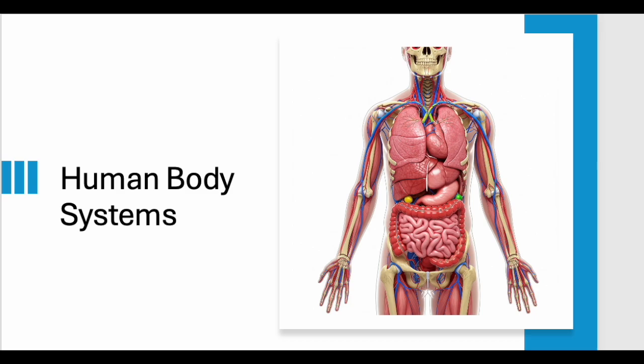So what exactly are these body systems we're talking about? Well, think about your body as a super complex machine with different departments, each with its own important job. These departments are the body systems and they work together in perfect harmony to keep us alive and functioning.